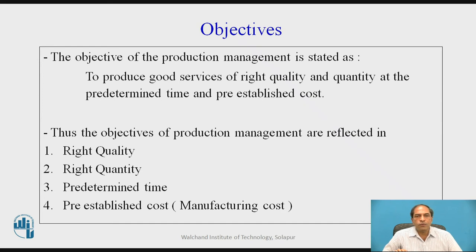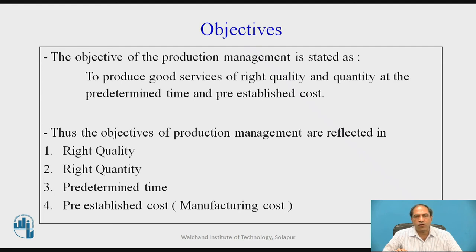The objective of production management is to produce goods or services of right quality and quantity at the predetermined time and pre-established cost. In short, the objective of production management can be summarized as: right quality, right quantity, right time — which is the predetermined time — and right cost. So we can define it with four Rs: the first is right quality, the second is right quantity, the third is right time, and the fourth is right cost.